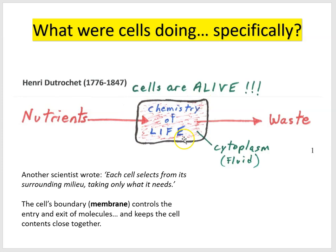We'll see how that is important for life as we study cells later in the course. We can think of the cell membrane as regulating the flow of materials into and out of the cell, as well as keeping all the chemicals closely confined so they can interact to perform the chemistry of life.